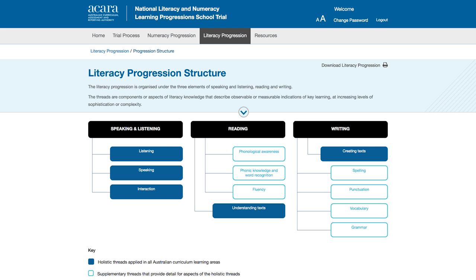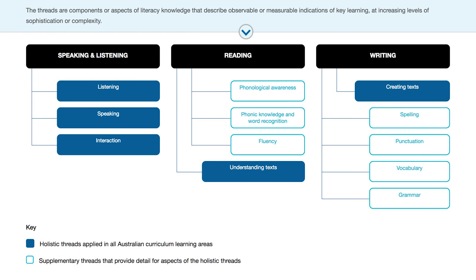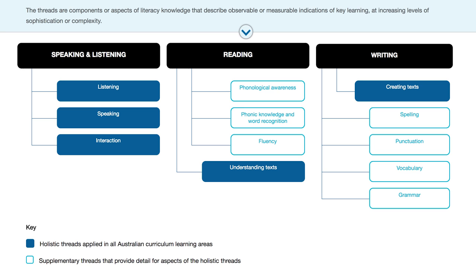Let's start with the structure. The literacy progression is organised under the three familiar elements of speaking and listening, reading and writing. These three literacy elements are important in all learning areas of the curriculum.